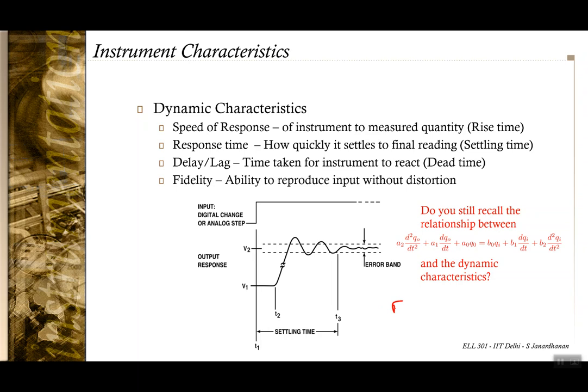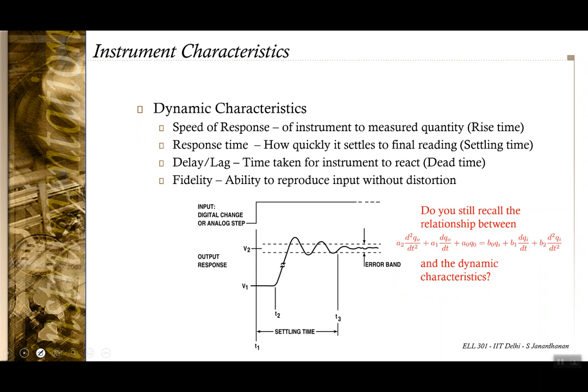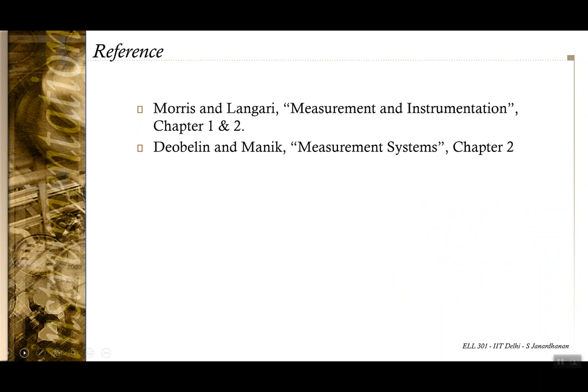If you have taken ELL 225, you would have seen how the parameters a0, a1, a2 in a second-order system correspond to dynamic characteristics. For further reading, refer to Chapter 1–2 of the measurement instrumentation book by Morris and Langari, and Chapter 2 of Measurement Systems by Doebelin. With that we come to the end of this lecture. Thank you.